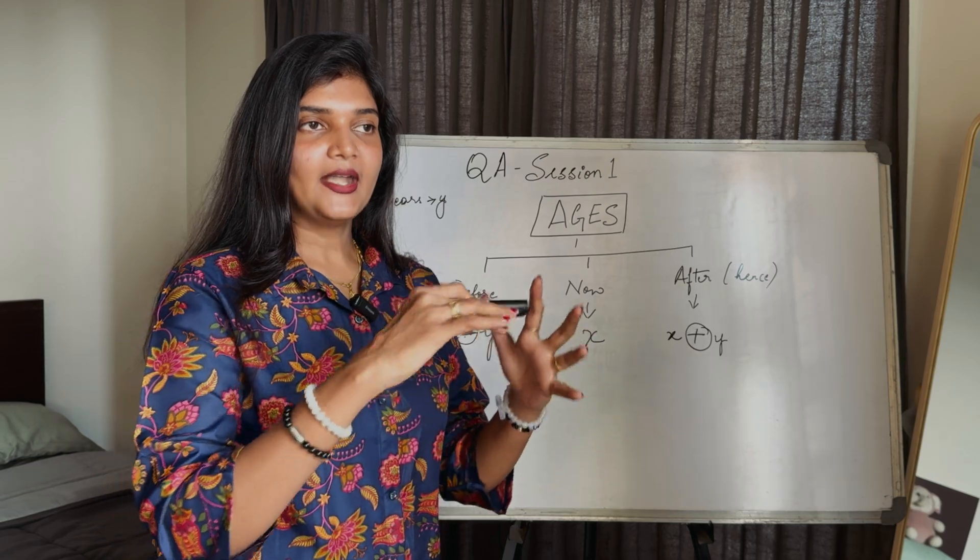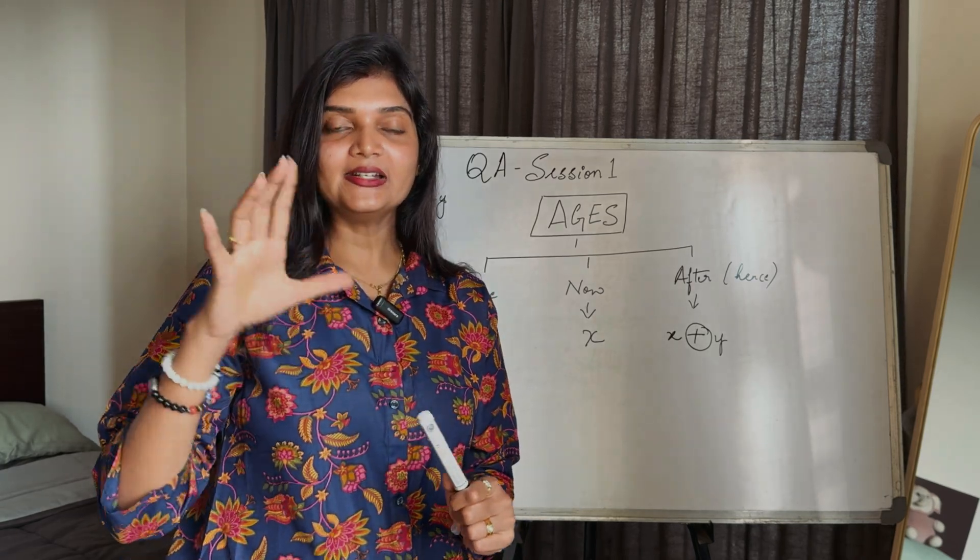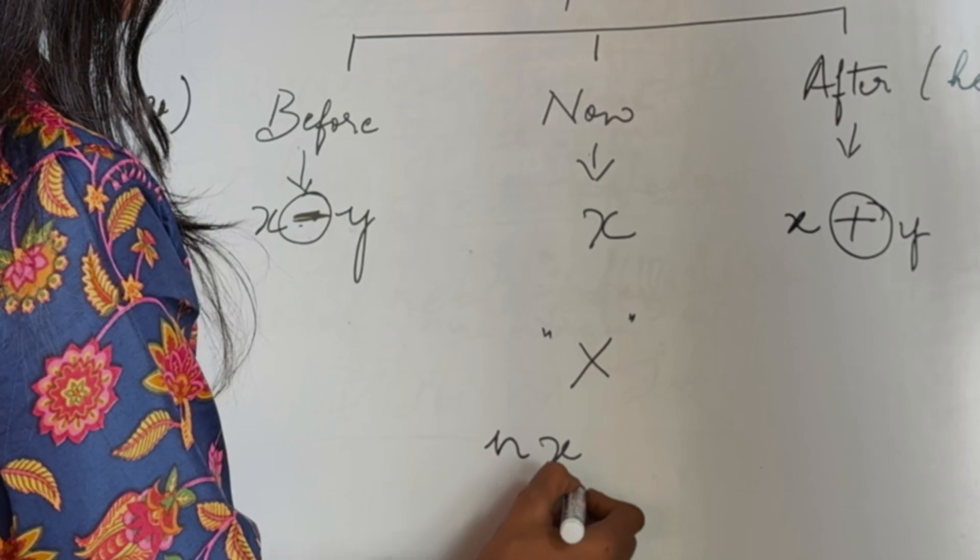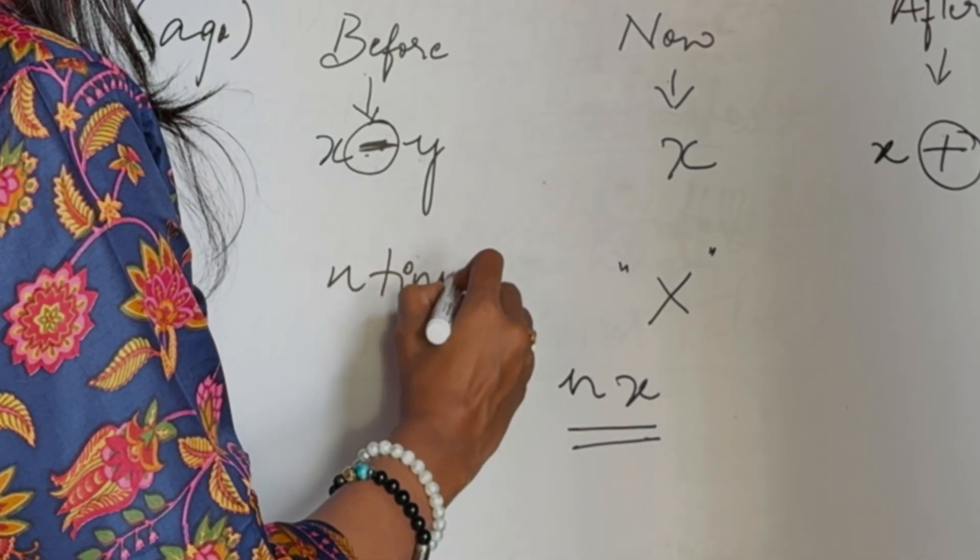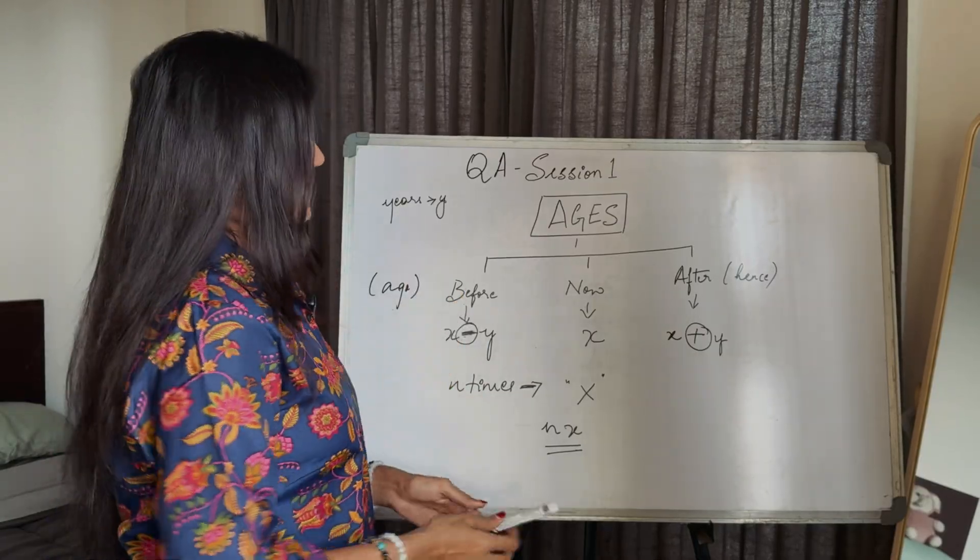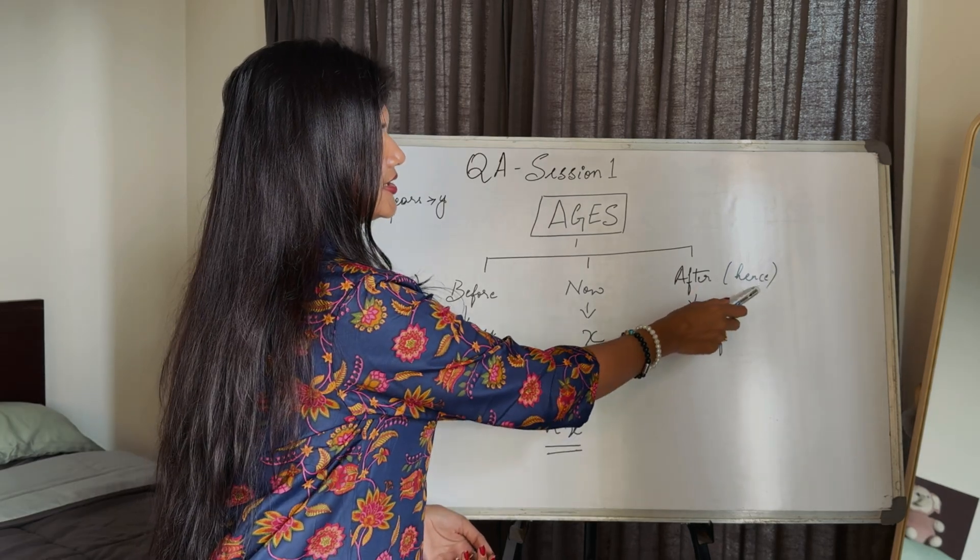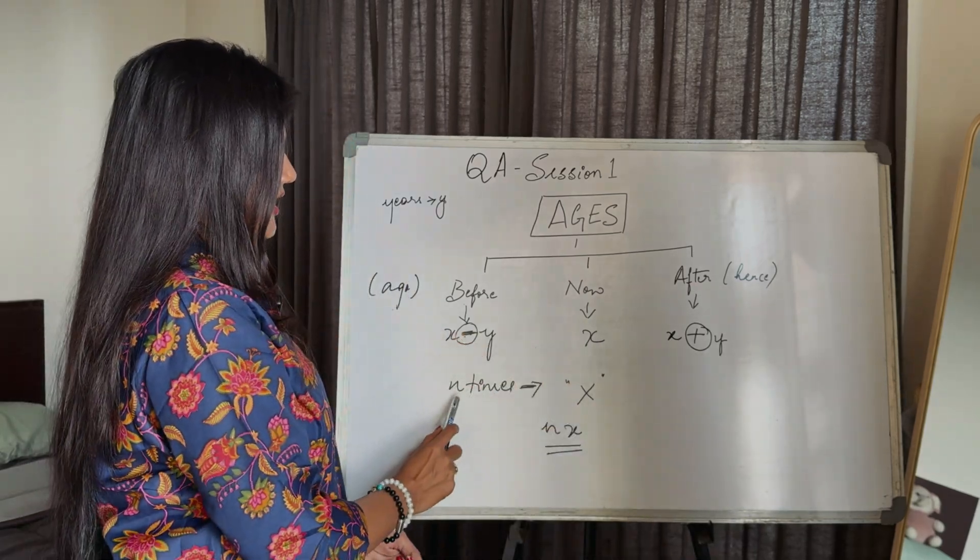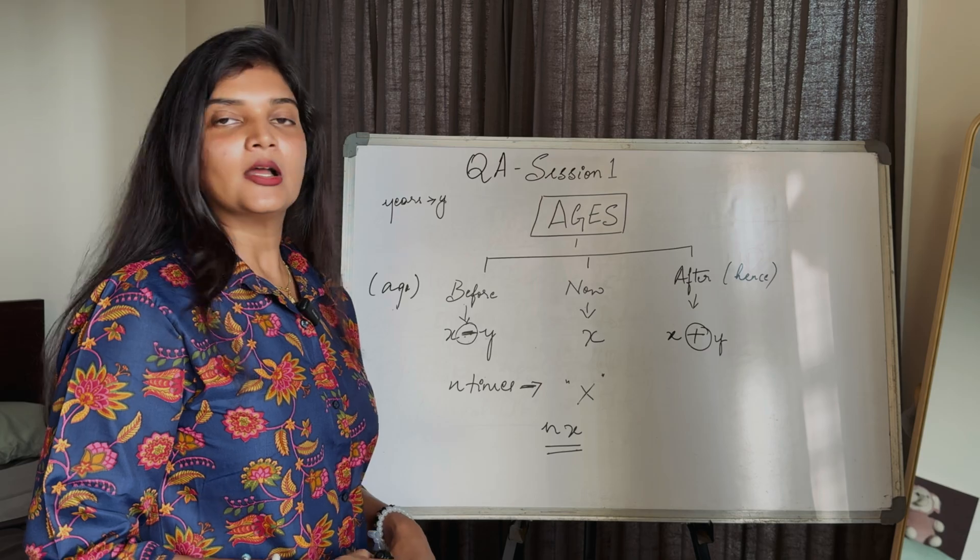One question might say n times, like six times greater than his son's age, seven times greater than his daughter's age. N times means multiplication - n times X. Once again I will explain: now means present, that is X. Before or ago means you have to use minus. After or hence means plus. And n times means multiply.